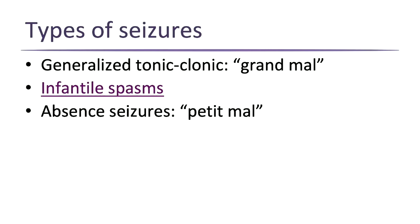Absence seizures — previously called petit mal seizures — are short staring spells that often affect elementary school-age kids. They're described as spacing off. The kid might be sitting in class and the teacher calls the parent saying your kid is just spacing off all the time. They're not spacing off — they're having a seizure. They eventually come out of it and go right back to what they were doing.